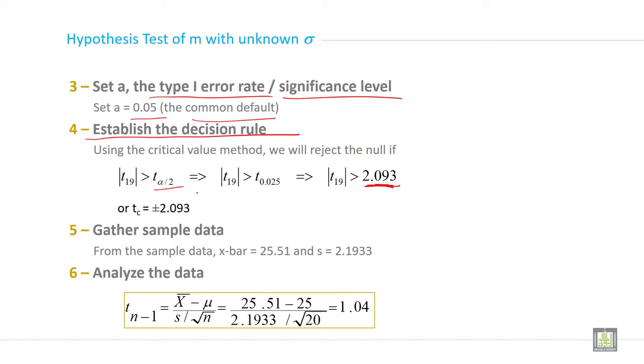Then step 5: gather sample data. From the sample data, x-bar = 25.51 and sample standard deviation s = 2.1933.